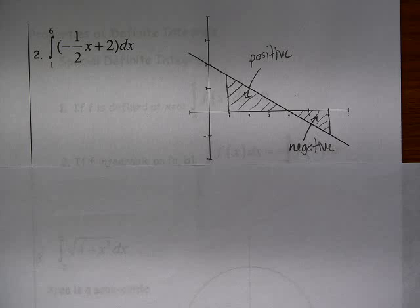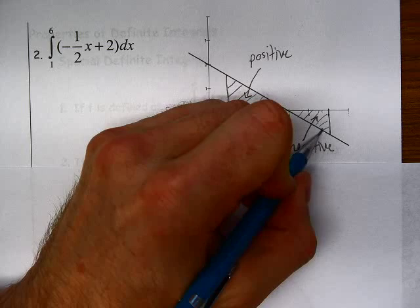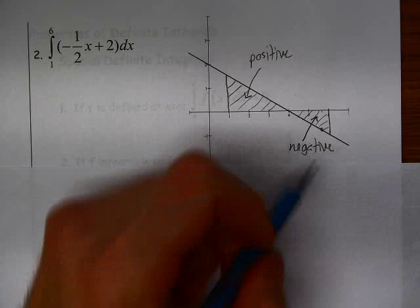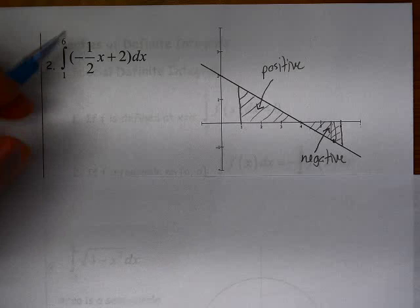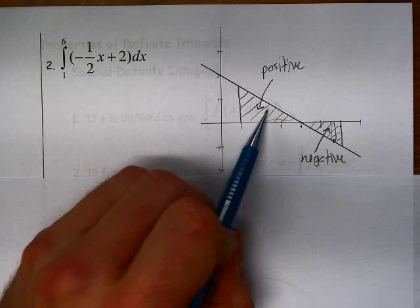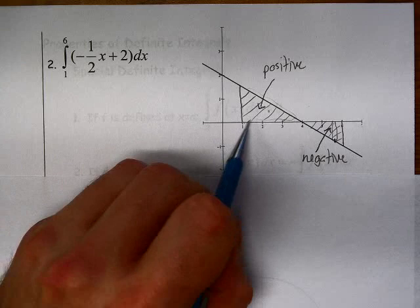but if you look back to the Riemann sum, the way we define the height was that f of c sub i. And in this case, the f of c sub i, the y value there is negative. So when we multiply that by some small width, we get an actual, it doesn't really make sense to say a negative area, but that's kind of the effect of it is that we treat it like a negative area. So this definite integral is going to be equal to this area here minus that area. This area has a positive value, this area has a negative value.